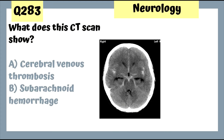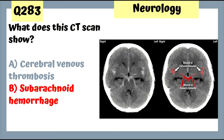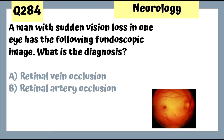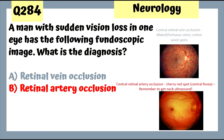Question 283: A CT scan showing blood in the Sylvian fissures and blood in the basal cisterns is a subarachnoid hemorrhage. Question 284: A man with sudden vision loss has a fundoscopic image showing a cherry red spot — that's retinal artery occlusion, not retinal vein occlusion which shows cotton wool spots.